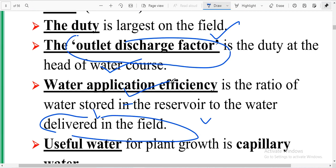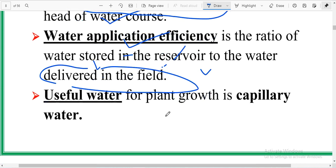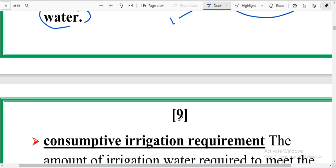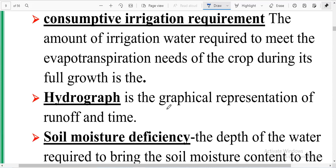Useful water for plant growth is capillary water. Consumptive irrigation requirement is the amount of irrigation water required to meet the evapotranspiration needs of the crop during its full growth.